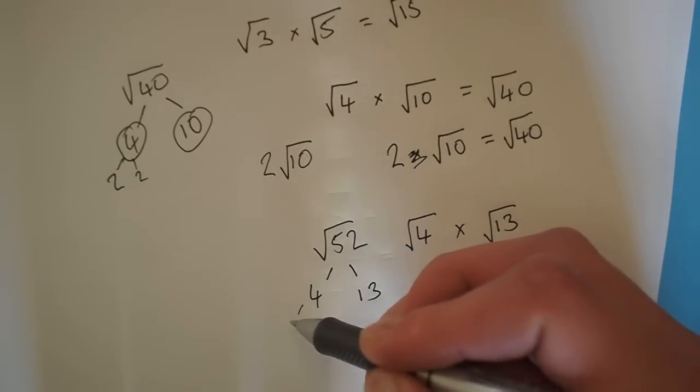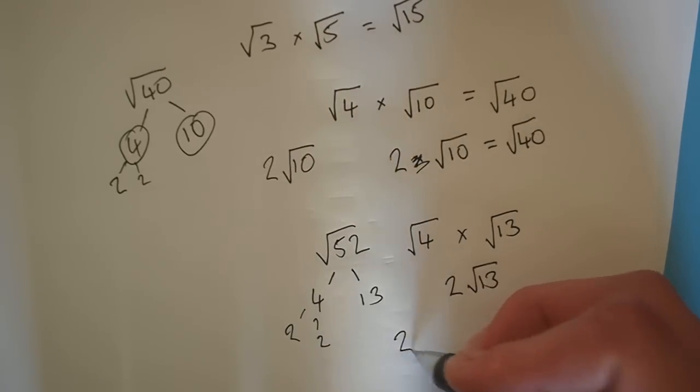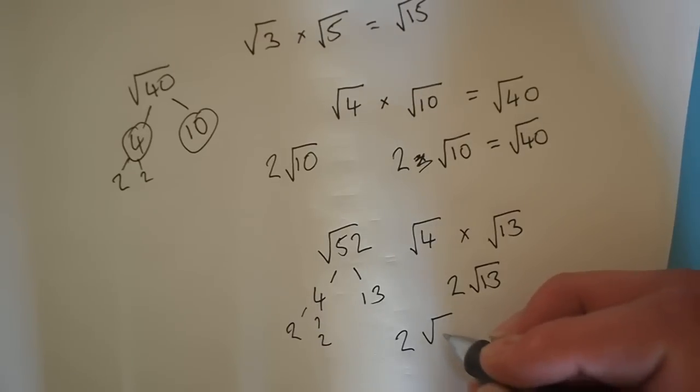This breaks down into a 2 and a 2. And then we left the 2 on the outside of the surd with 13 left in the middle.